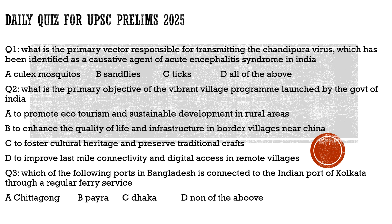Coming to question two: What is the primary objective of the Vibrant Village Program launched by the Government of India? We discussed how it aims to develop border areas near China. Option A — to promote ecotourism and sustainable development in rural areas — is incorrect, because it is specific to villages bordering China, not all rural areas.